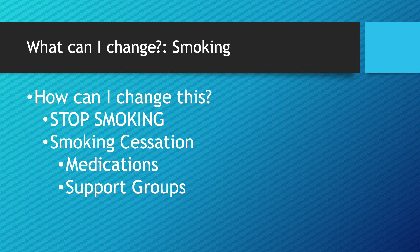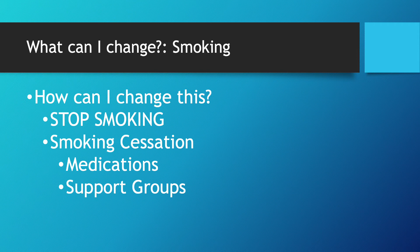Other things we want to tell patients include looking at their environment — if they're around stressful situations that usually lead them to smoke, trying to modify those. Or if they're around a lot of other smokers, trying to avoid that secondhand smoke. It can be really hard — a lot of people want to quit but everyone in their house smokes, and so sometimes it has to be a team effort, getting the whole family involved. But it's definitely one of the best things a person can do to decrease their risk factors for cardiovascular disease.